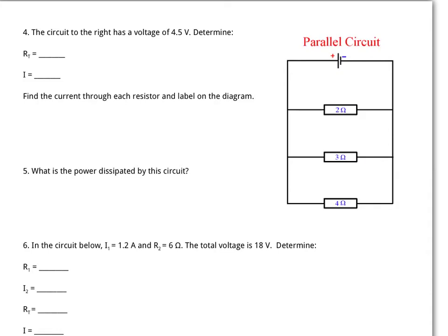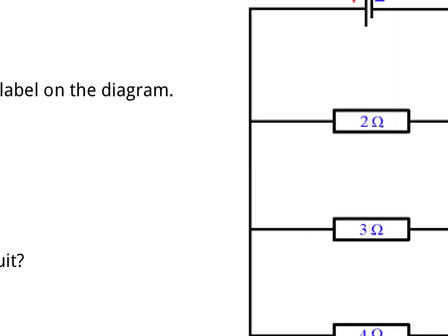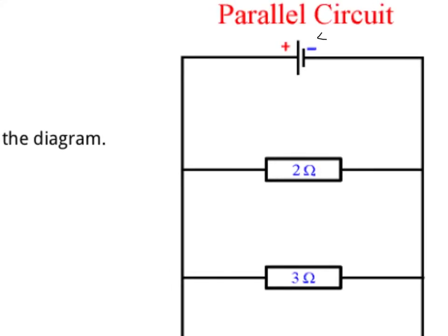Question four introduces parallel circuits. In a parallel circuit, we have multiple resistors and multiple pathways that current can follow. In this circuit, current leaving the battery can go through the top pathway, the middle pathway, or the bottom pathway. In any of those three cases, the current experiences a full dose of voltage — in this case 4.5 volts — so each branch sees 4.5 volts. Each branch has its own resistance, so there will be differences in how the current is split.